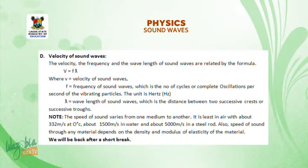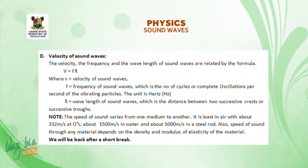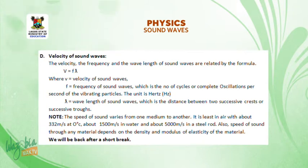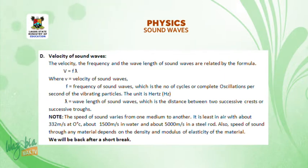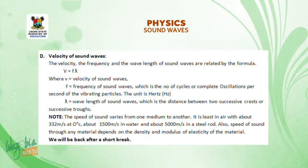It should be noted that the speed of sound varies from one medium to another. That is, it is least in air, with about 332 meters per second at zero degrees Celsius, and about 1,500 meters per second in water, and about 5,000 meters per second in a steel rod. Also, the speed of sound through any material depends on the density and modulus of elasticity of the material.